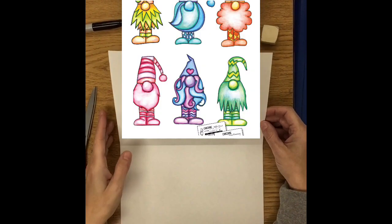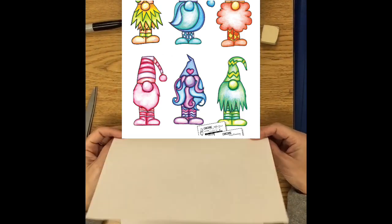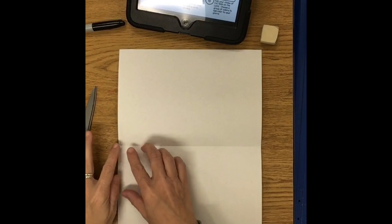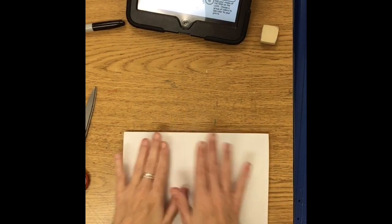Hi boys and girls. We are going to get started with our gnome drawings. So we're going to do six of these little cutie pies in a row. So we are going to need to make our paper change a little bit.